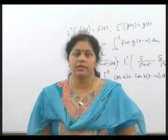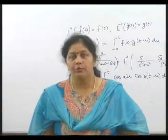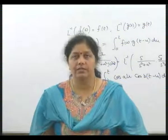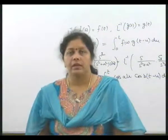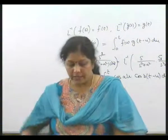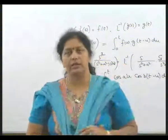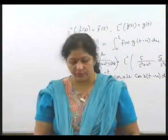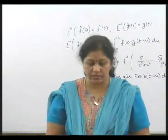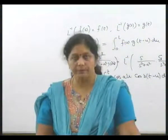L inverse of 1 upon (s minus a) squared minus b squared gives 1 by b of e^(at) cosh(bt). These are the standard formulas used in inverse Laplace transformation. There are also some key properties, such as the shifting property for inverse Laplace transformation.